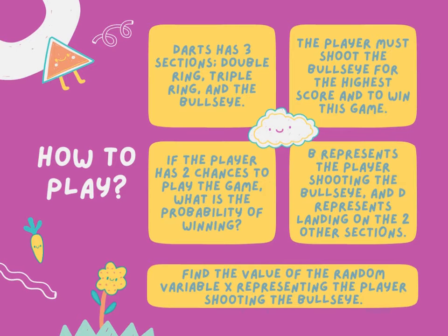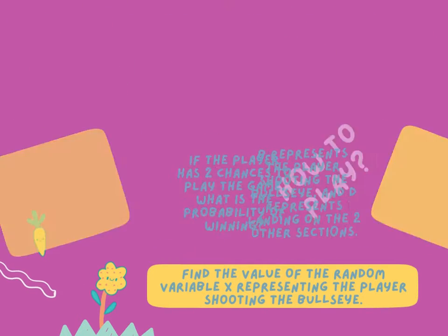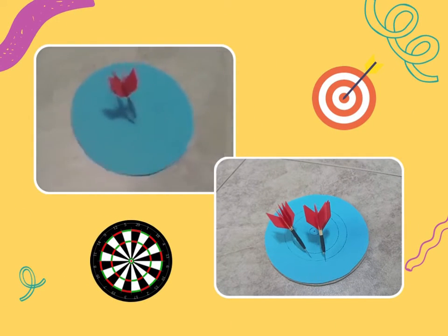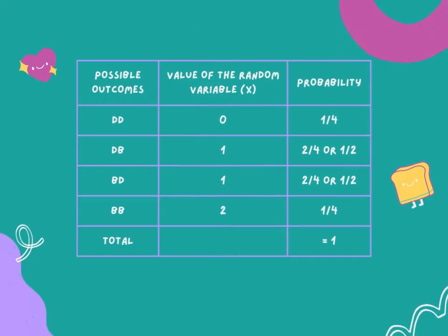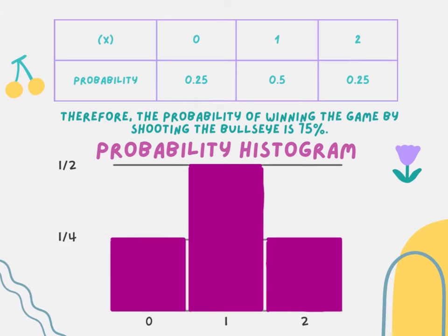Find the value of the random variable X representing the player shooting the bullseye. Here are our possible outcomes obtained, and we have the probability histogram. You can get the answer by simply adding the probability obtained for numbers 1 and 2: 0.5 plus 0.25 equals 0.75, which is equivalent to 75%.